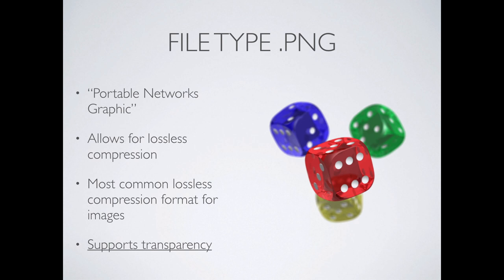PNG — the Portable Network Graphic — allows for lossless compression. So we get a compressed file that's a little bit smaller than a full-size file, but we're not losing any information — we're keeping that high-quality information. It's the most common lossless compression format. The big advantage is that it supports transparency. In a few classes we're going to start working in Photoshop — we're going to isolate objects, get rid of backgrounds and have just people cut out. We're going to save those as PNGs to preserve the transparency behind the object, which allows really easily to collage people or other things into a particular scene.